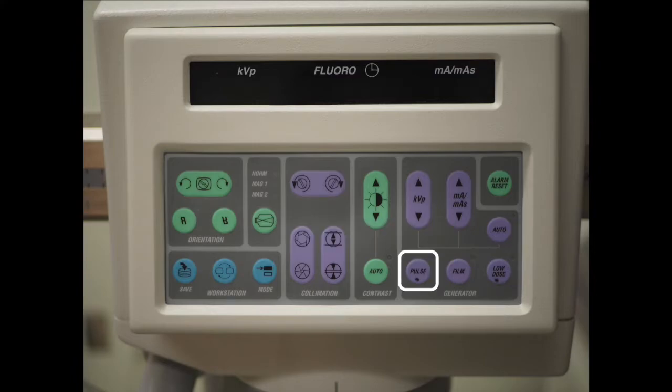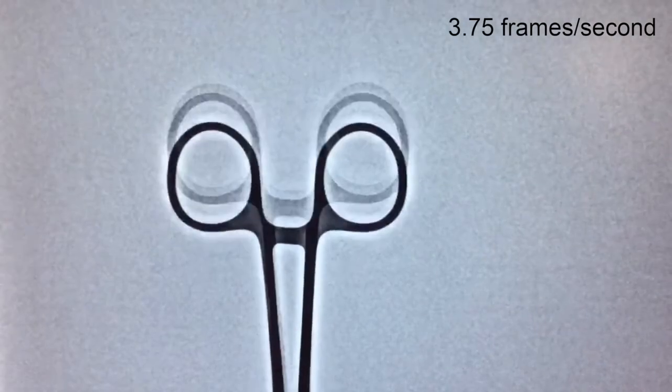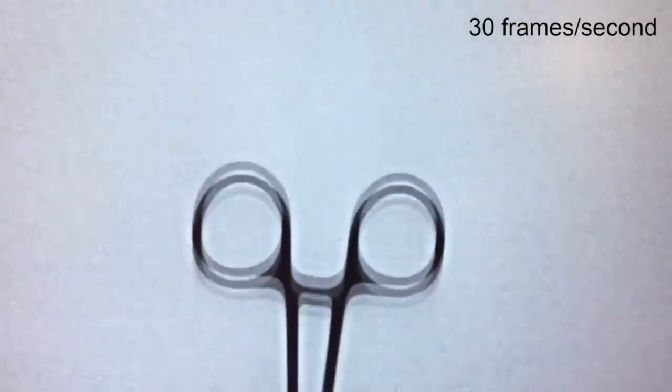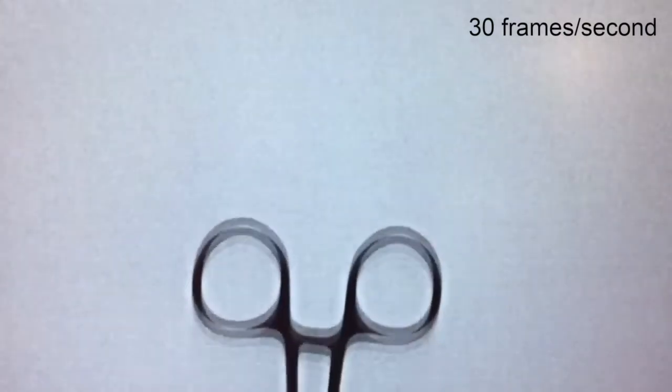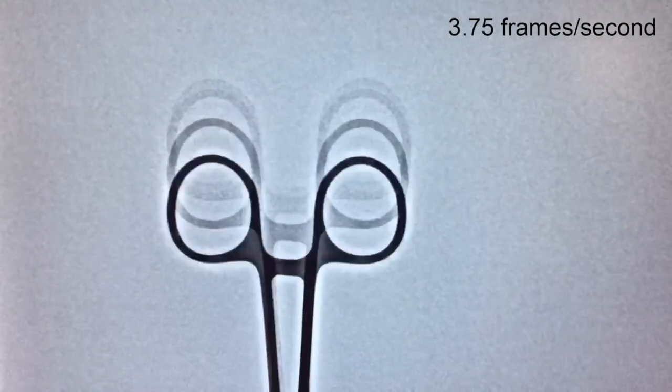Additionally, pulse dose fluoroscopy should always be used. Instead of emitting a continuous X-ray beam, the fluoroscope emits intermittent, short pulses of X-rays. The typical settings include 30, 15, and 7.5 frames per second. Decreasing the number of frames per second makes for a choppier image, however dramatically reduces the radiation dose. It's best to choose the lowest pulse dose needed for an adequate image.